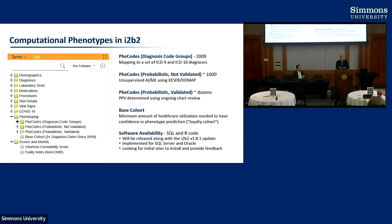There's also something called a base cohort. You need a certain amount of data to have confidence the phenotypes are real. If a patient just had one emergency room visit for a sprained ankle and never came back, that may not be enough information. Simple methods include requiring at least three visits. Tomorrow we'll hear about loyalty cohorts, a more sophisticated way of determining if patients have sufficient data at your institution.